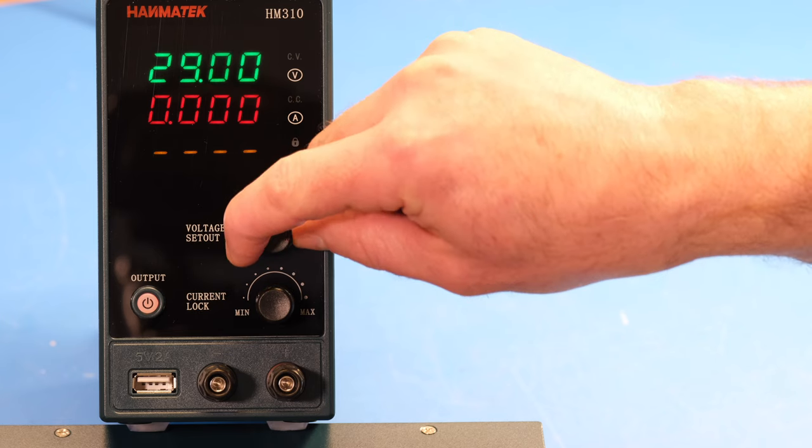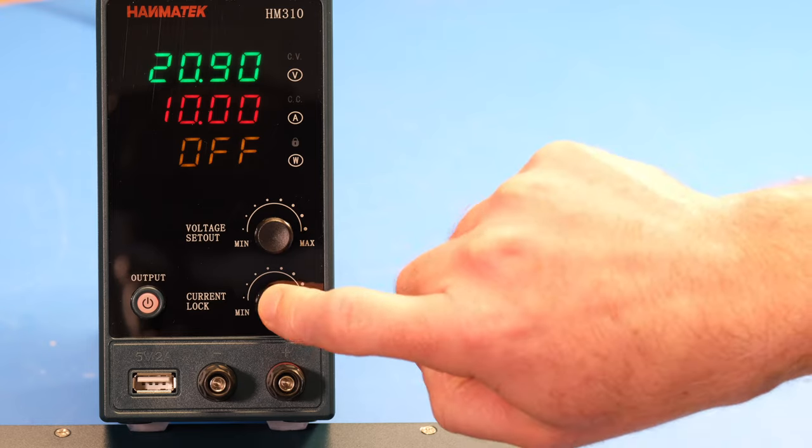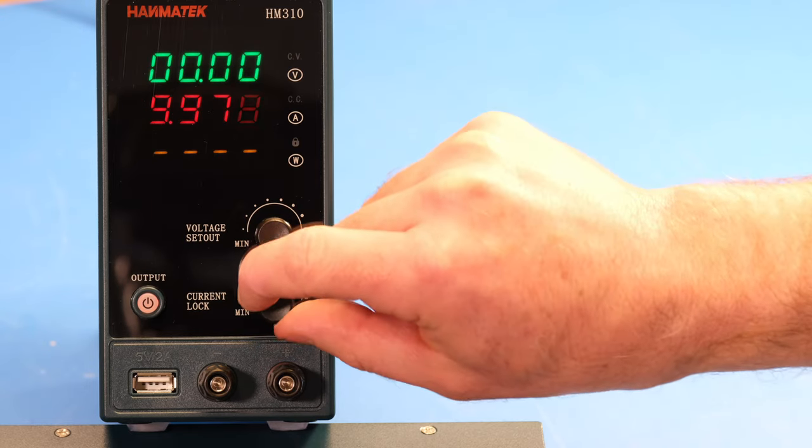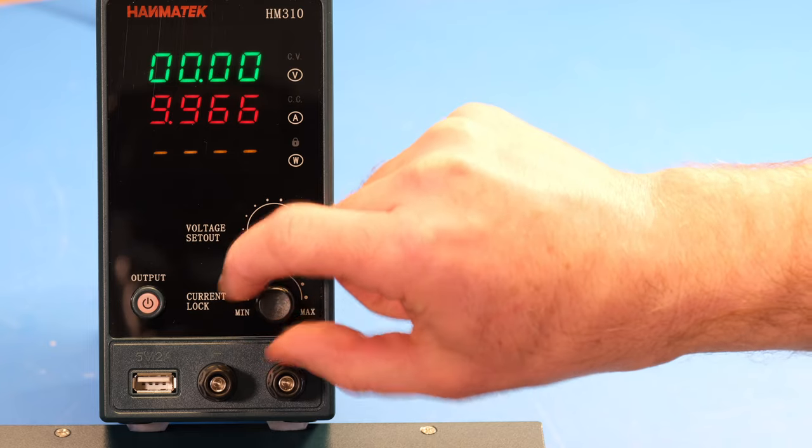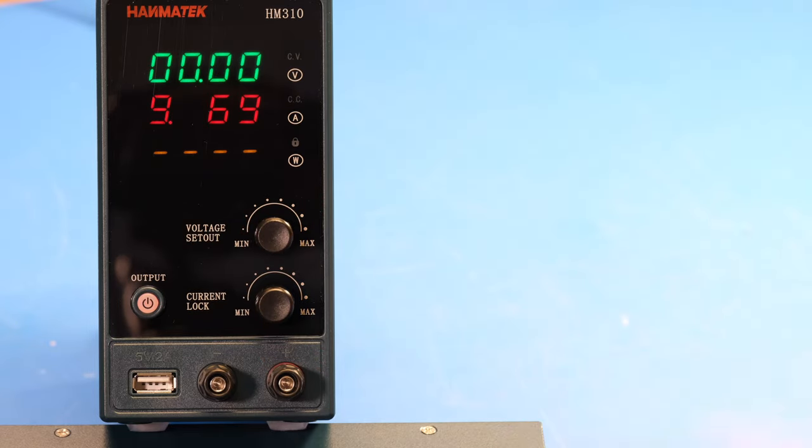So now we're cooking with gas, like that. And similar for the current, if you push the current encoder, then you get to change the current 1 milliamp at a time, and you can select which digit you want to change. It's a bit unfortunate that the supply times out so quickly.